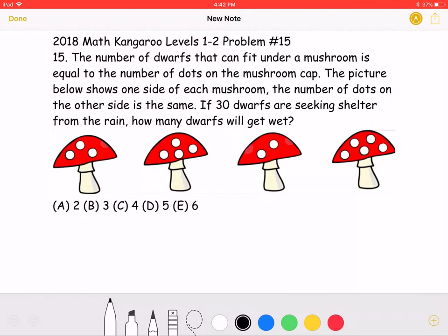So for the first mushroom, where we count a total of three dots, we know that the other side will also have three dots. So it will have a total of six dots, which means it can hold six dwarves.